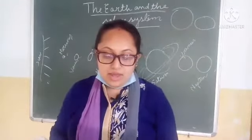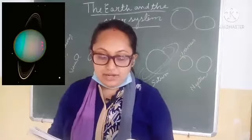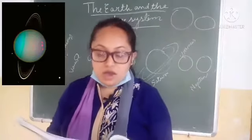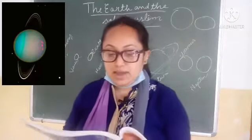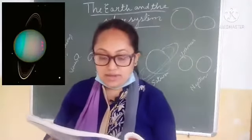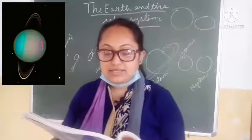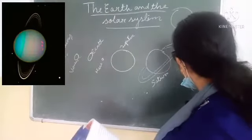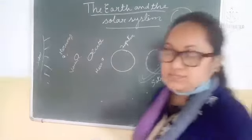Next is Uranus. Uranus is named after the Greek god of the sky. It was discovered in 1781 by William Herschel. Uranus also has rings around its equator.